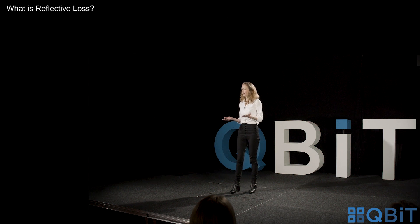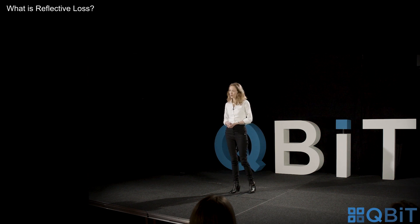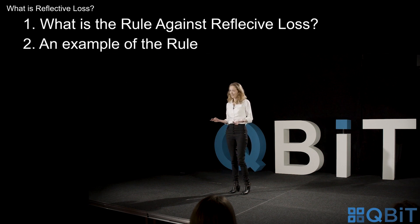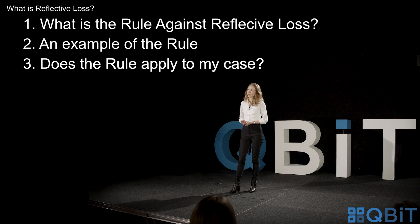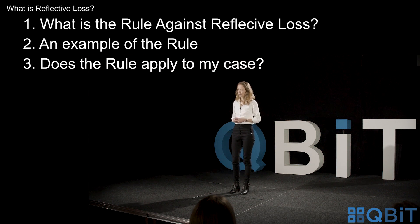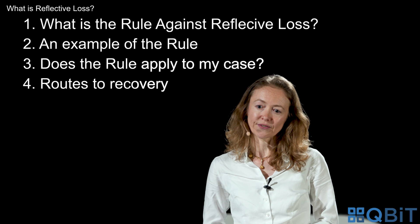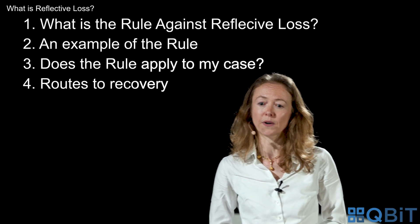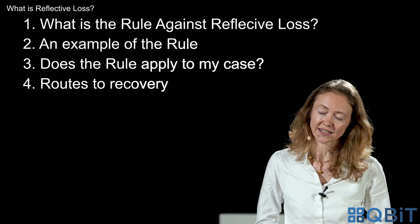Let me give you a bit of an overview as to where I'm going to go with this talk. Firstly I'll tell you what the rule is. I'll give you an example of the rule so you can see how it might work in practice. I'm going to warn you about a few points that you might need to look out for when you're thinking about whether the rule applies to your particular case. And finally I'll run through some routes to recovery if you find yourself faced with a claim that you think is going to be barred by the Rule Against Reflective Loss.